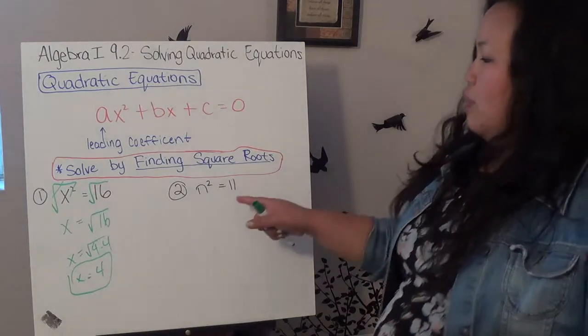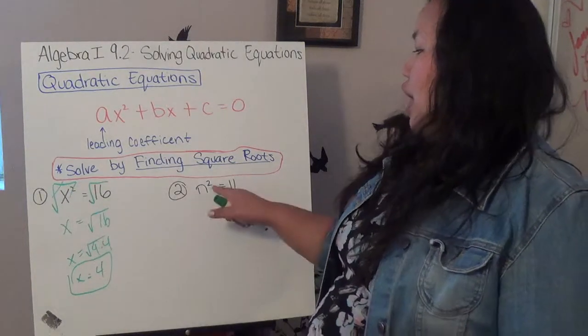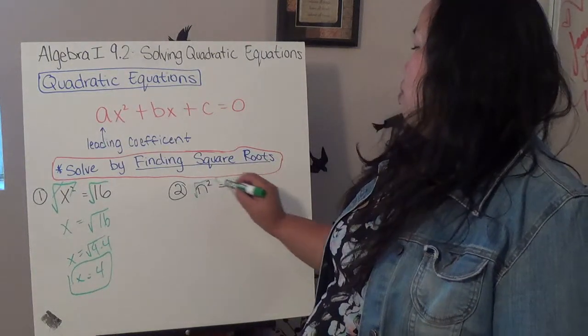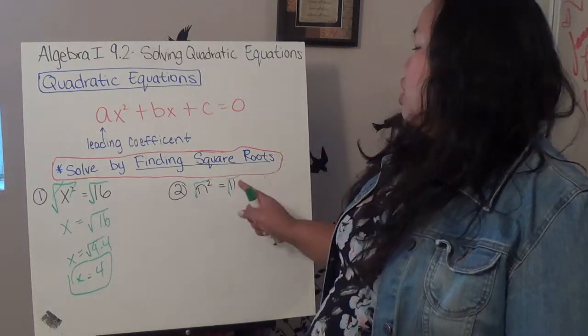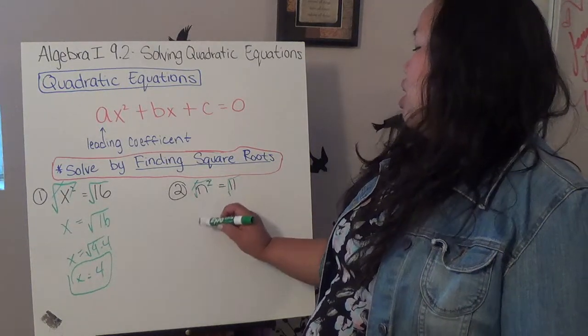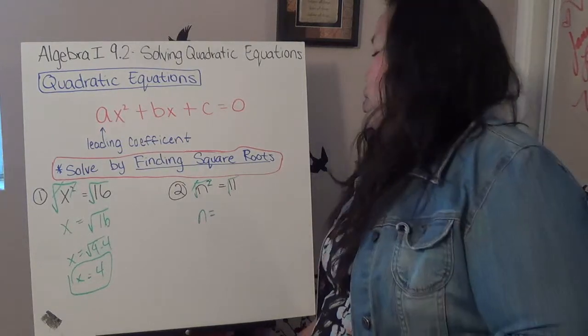So, the next thing we're going to do here is very similar. I have an n squared. So, I need to get rid of that square, so I'm going to square root both sides. Unfortunately, this doesn't give me a perfect square. These cancel out, end up with n equals the square root of 11.